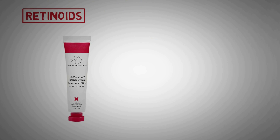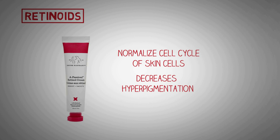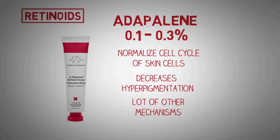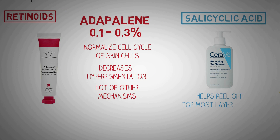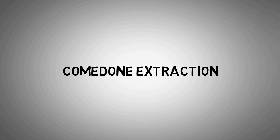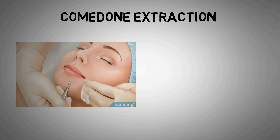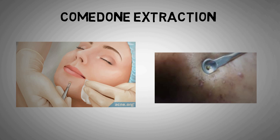Retinoids normalize the cell cycle of keratinocytes and have many other beneficial effects for acne on the face. The most commonly used is Adapalene at a concentration of 0.1 to 0.3%, applied twice daily — it comes in gels, creams, and lotions, and you will see results within a few weeks. Salicylic acid face wash helps to peel off the topmost layer of dead cells on your face and also reduces the stickiness of individual cells with each other. In comedone extraction, a comedone extractor instrument is placed central to the comedone and firm downward pressure is applied, causing the unwanted material to come out.